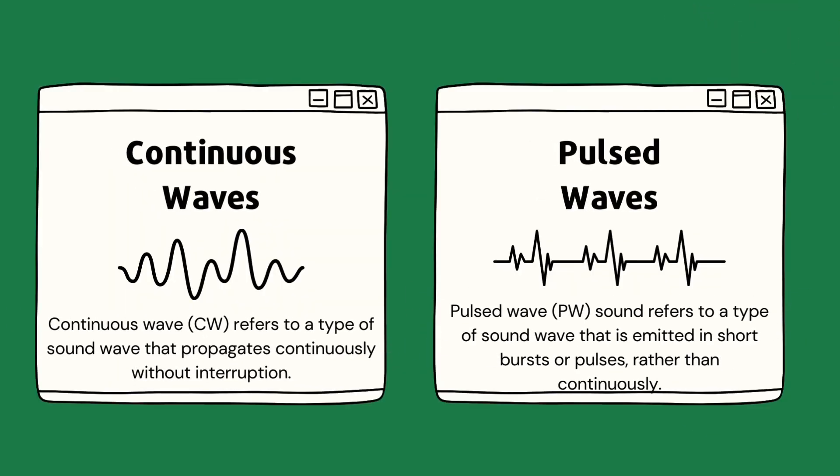First, we're going to discuss continuous waves versus pulsed waves. Continuous waves emit a constant stream of sound, meaning that the sound is always transmitting. Since continuous wave sound is always transmitting, there's never a moment where it's listening or receiving anything back.